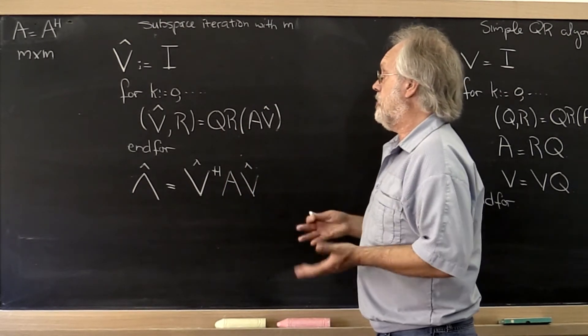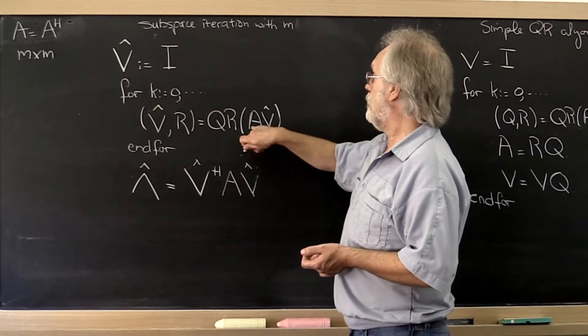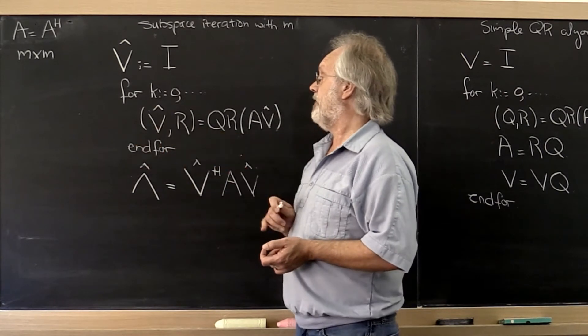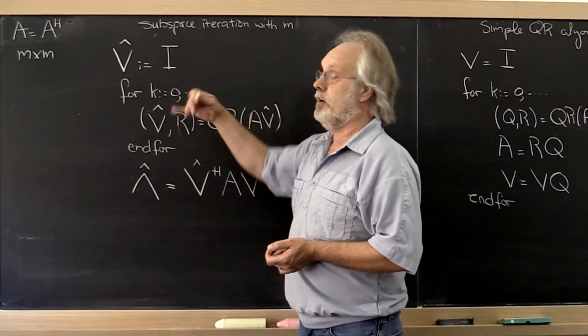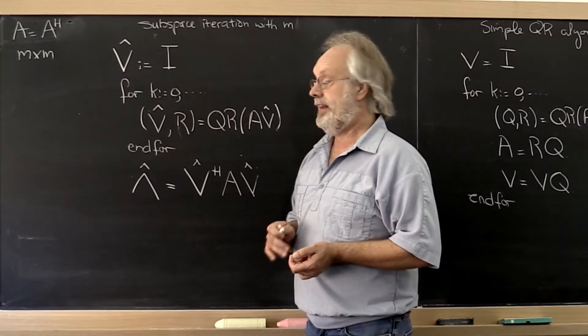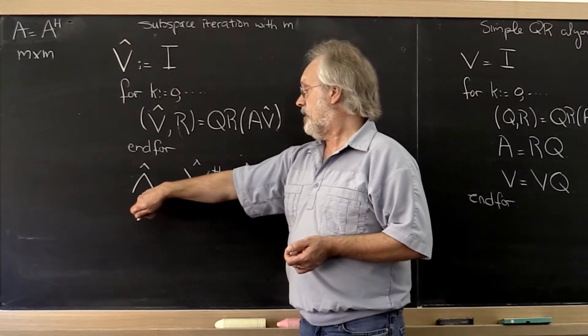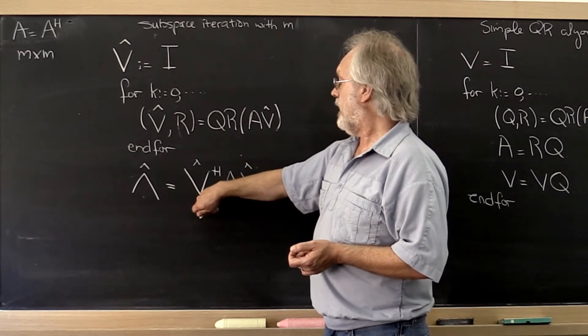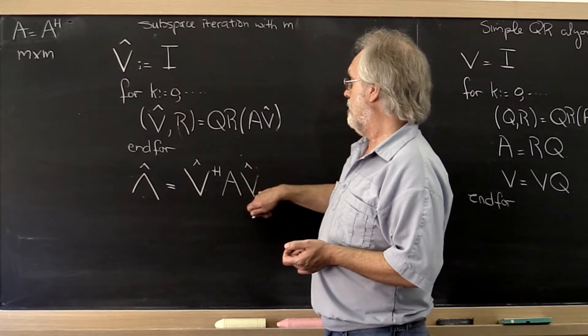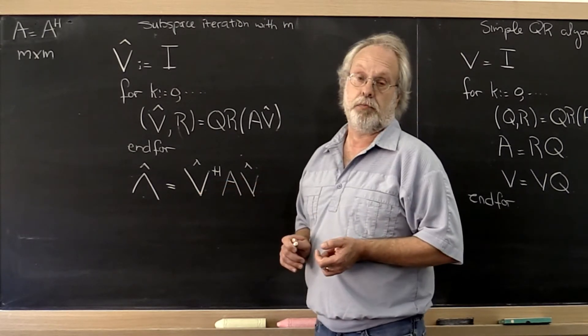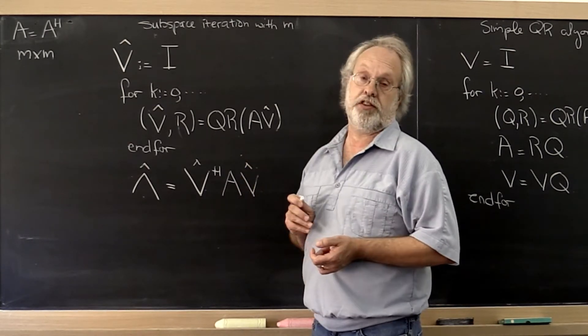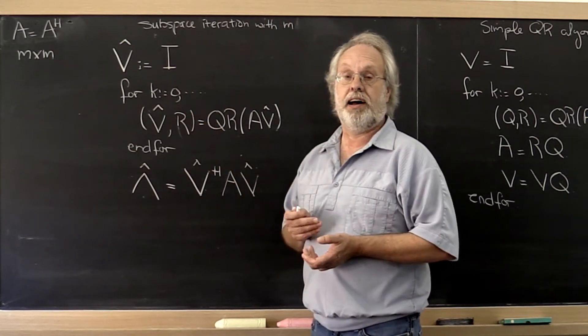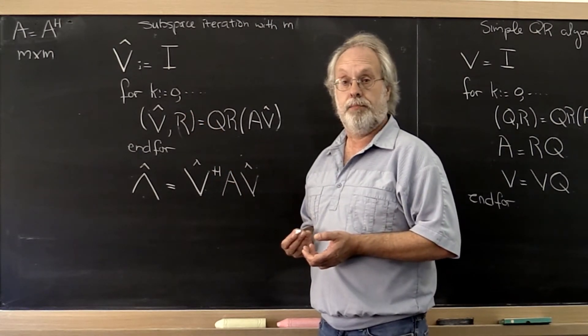What we could then do is in each iteration simply do A times that matrix, then compute its QR factorization and keep iterating. And then in the end we could compute a diagonal matrix that comes from taking all of those eigenvectors and hitting them on the left and the right times our matrix A, which would give us an approximately diagonal matrix where we can read off what the eigenvalues are.